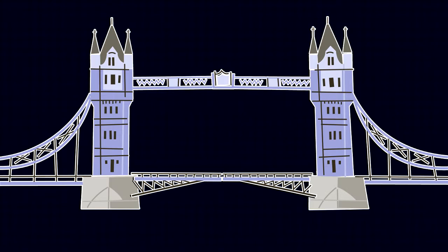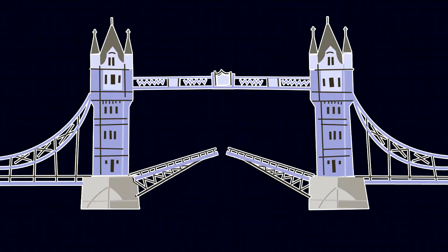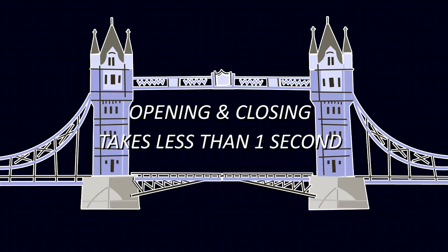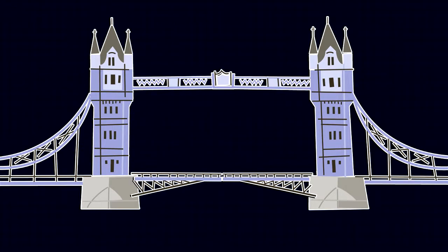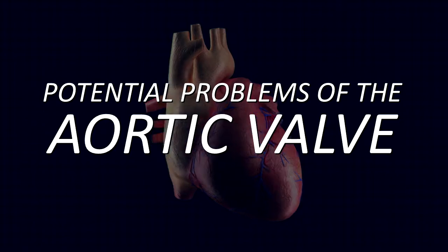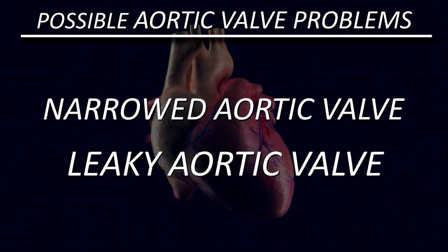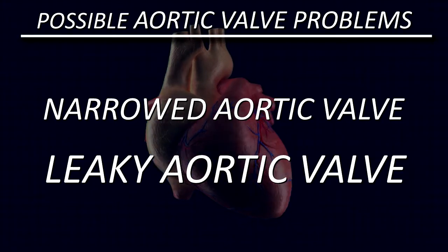Try to visualize the drawbridge graphic: the drawbridge starts out closed, opens all the way up, and then closes again — all in less than one second, occurring billions of times in a lifetime. In thinking about problems with the aortic valve, there are really only two different problems: a narrowed aortic valve or a leaky aortic valve. In reality, people can have both a narrowed and a leaky valve, and in fact this commonly happens.